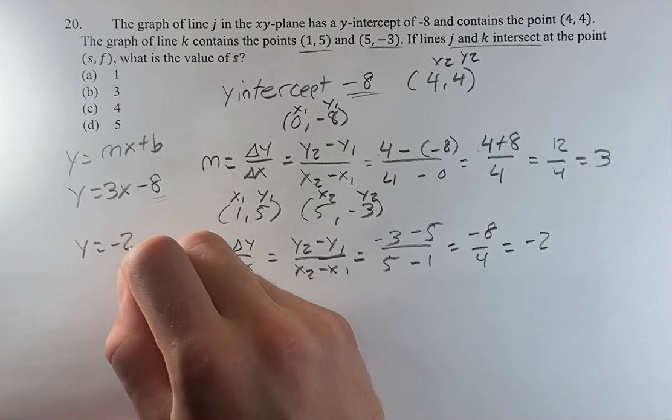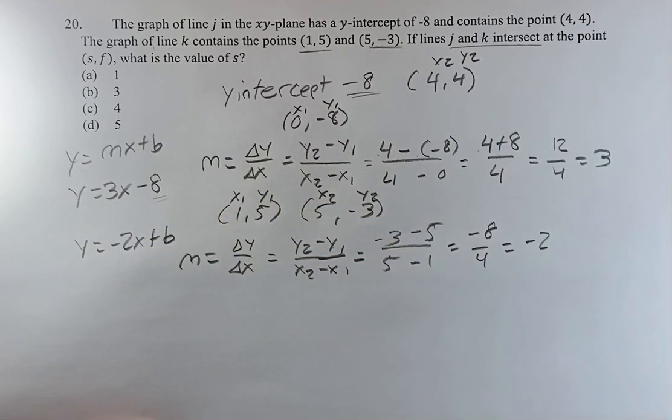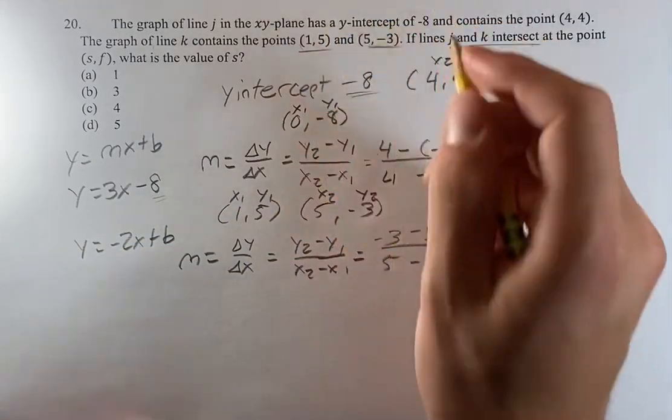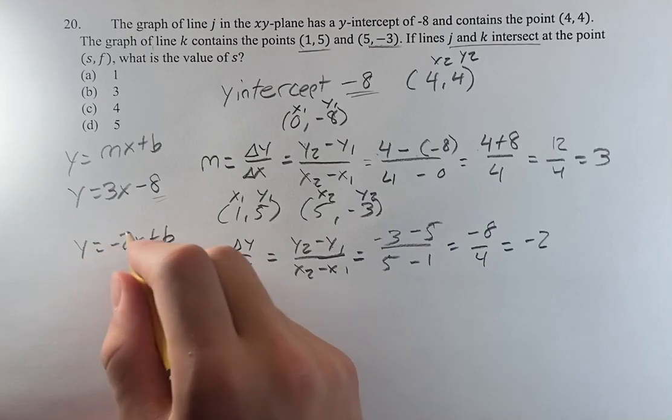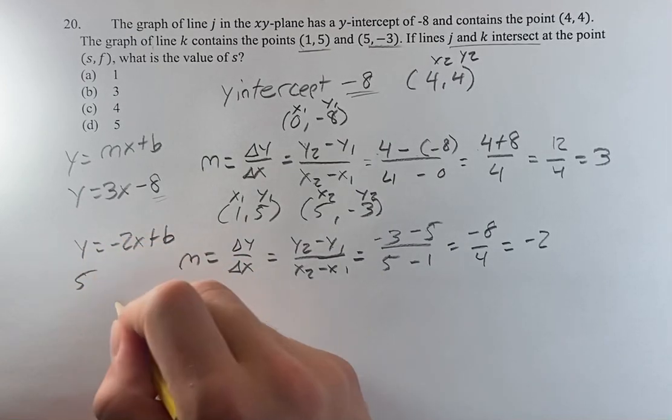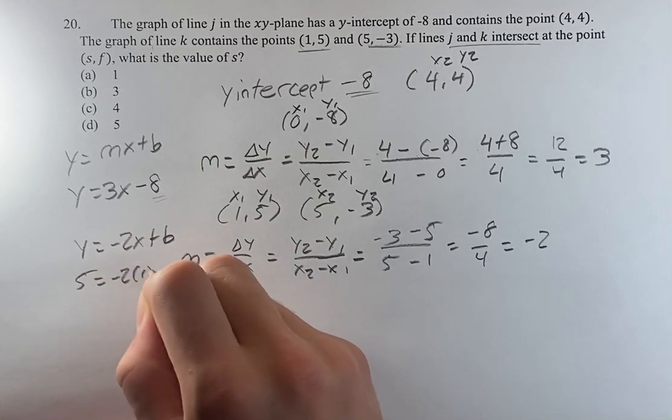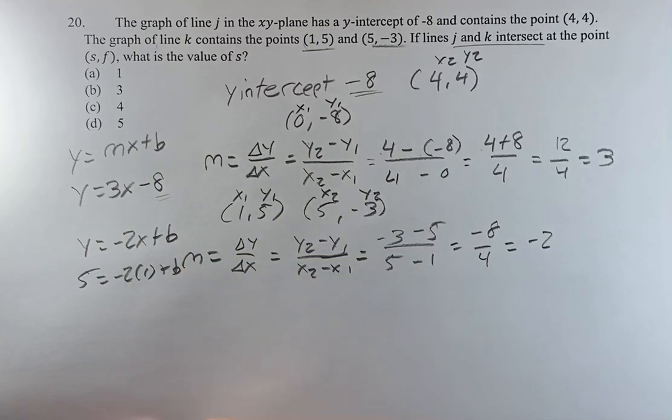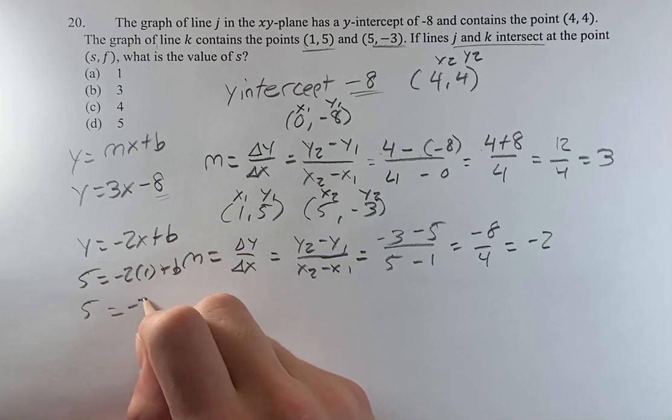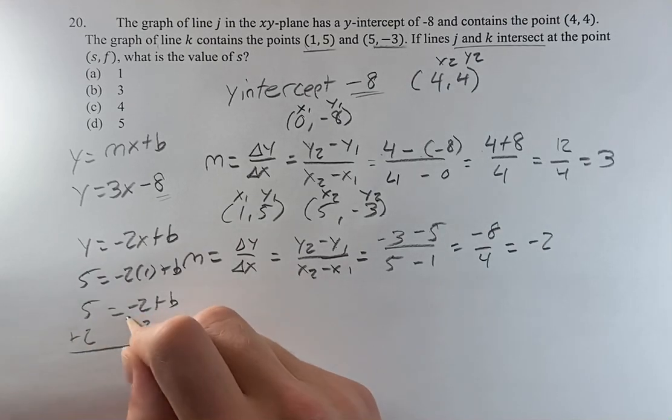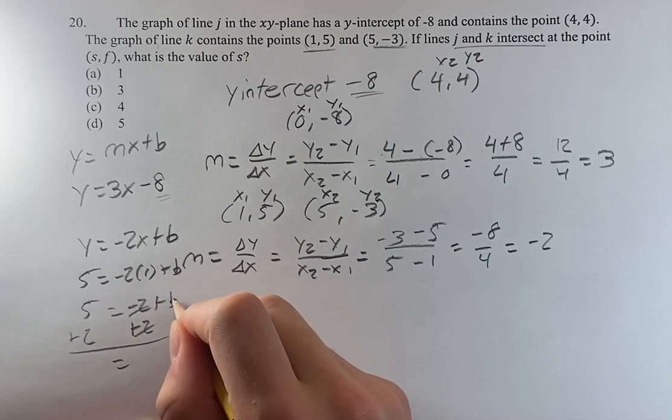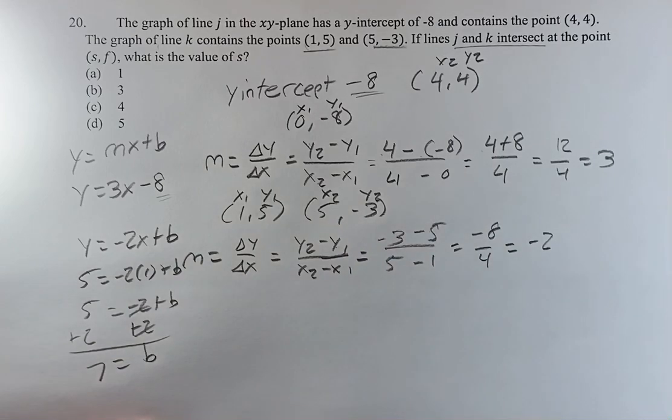Now, we're still looking for b. We're going to do that by plugging in one of these points into x and y in this equation. 5 equals negative 2 times 1 plus b. Now, we can solve for b. 5 equals negative 2 plus b. Adding 2 to both sides, these 2's cancel out, which gives us b is equal to 7.